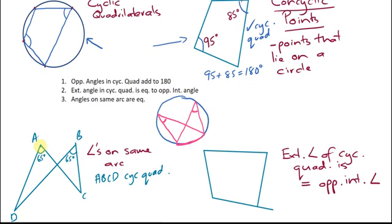Which means that if we join these points together, we would have a cyclic quadrilateral. Now you'd only need to find one pair of angles on the same arc in order to prove that that particular quadrilateral is cyclic.